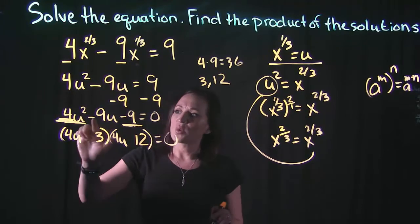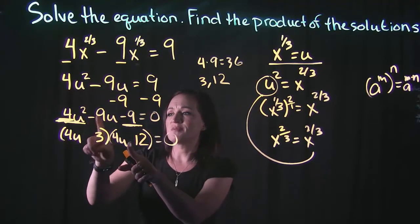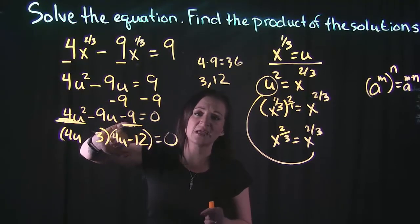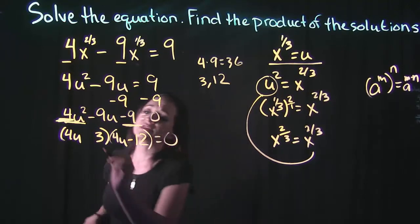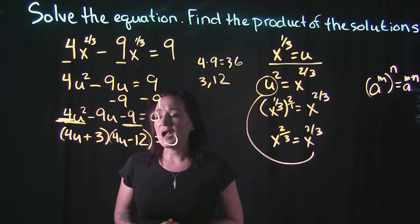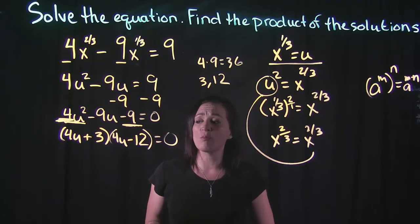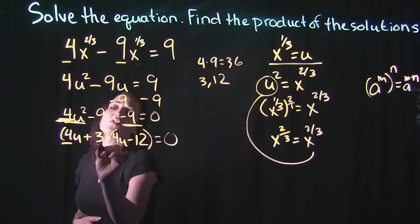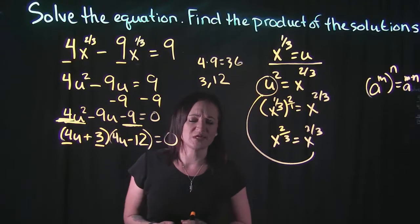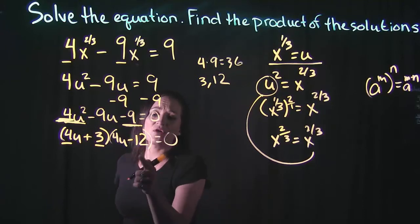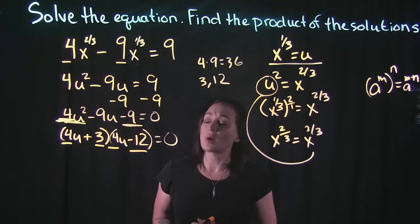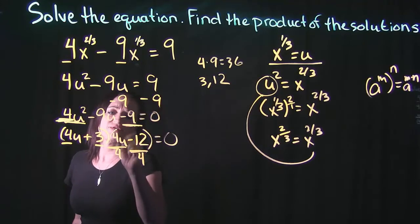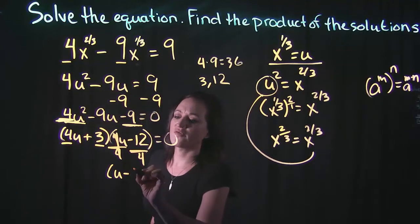Now look at the signs. Whatever sign your middle term has, that belongs to the bigger number. The middle term is negative, so the negative goes with the 12. And since the last term is negative, the factors have to have different signs — so since 12 is negative, 3 has to be positive. The last step in no-fuss factoring is to reduce one or both factors — like simplifying fractions. 4 and 3 share no common factor, but 4 and 12 do — divide out a 4: 4 divided by 4 cancels leaving u, and 12 over 4 is 3.